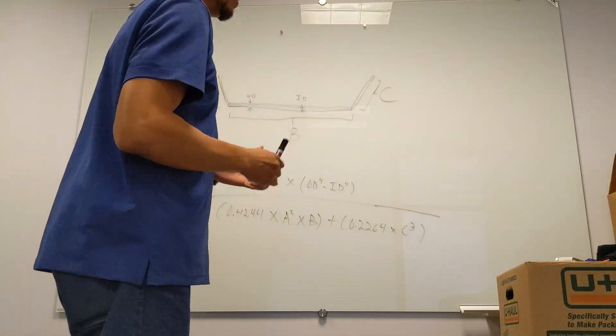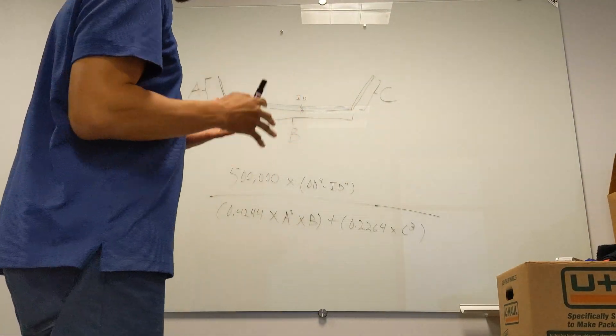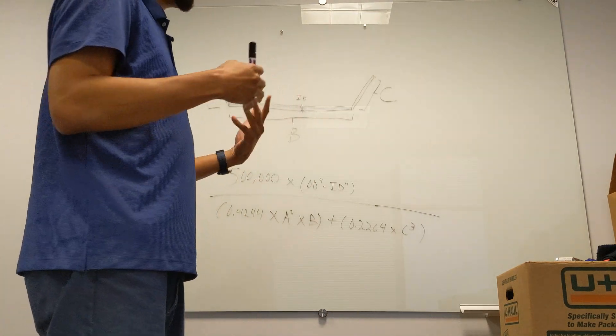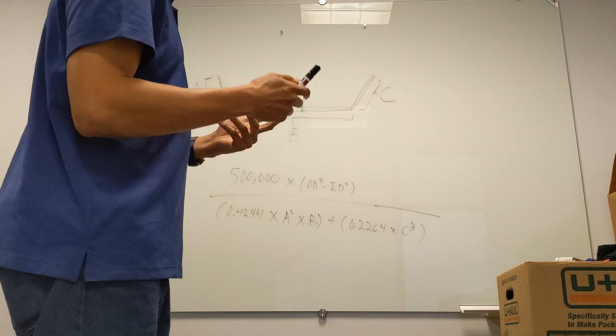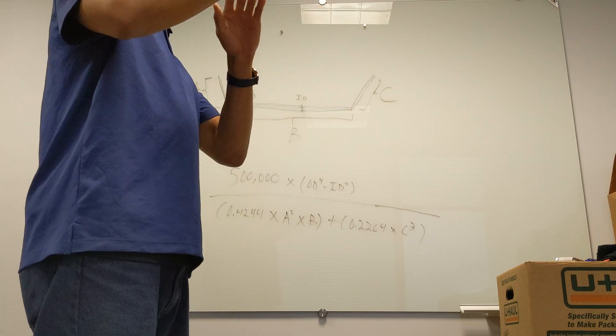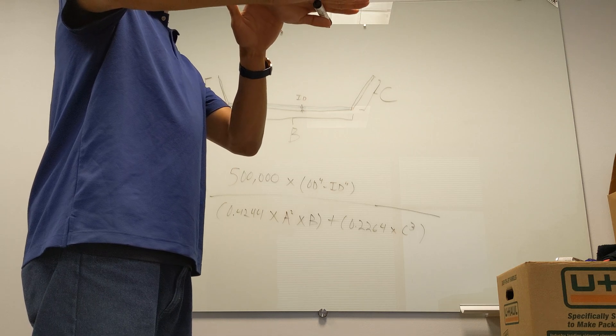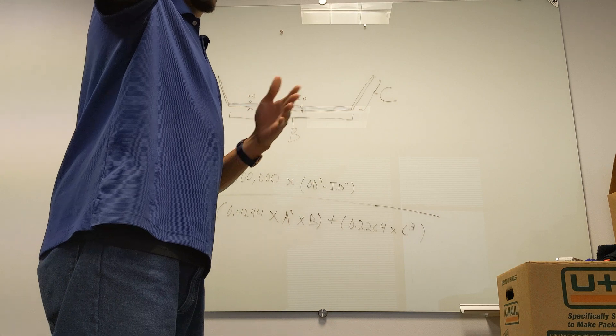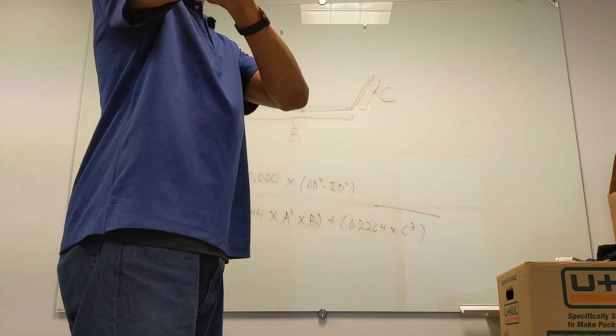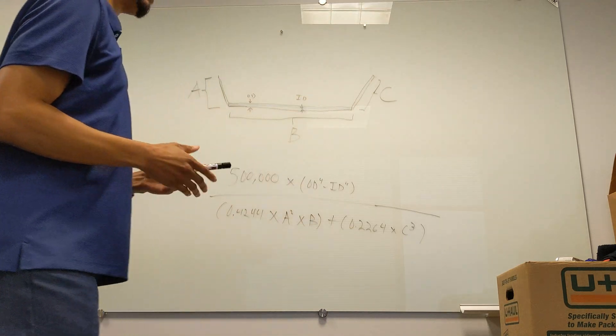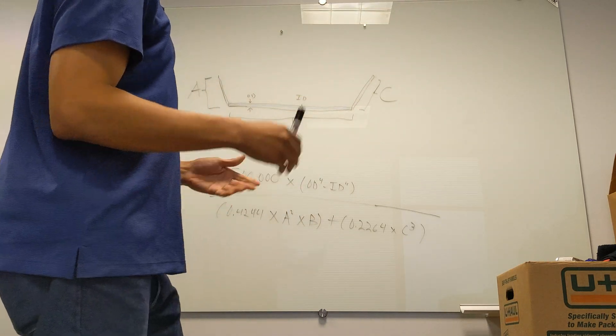Okay, so after seeing that, we can determine that basically the sway bar is a torsion, kind of like a spring, so it should have a rate—a rate of how much pound force you need to apply in order to compress the bar, pressing like this.